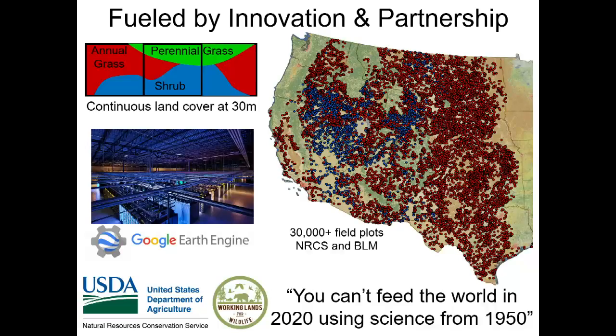Now that Google and other companies have removed the barriers and limitations on access to data, how can we use these technologies to improve rangeland management, rangeland conservation, and to ensure sustainable working landscapes into the future? I'm going to talk about one single project — using these datasets to create continuous land cover maps for all rangelands in the Western United States, including the Great Plains and West.